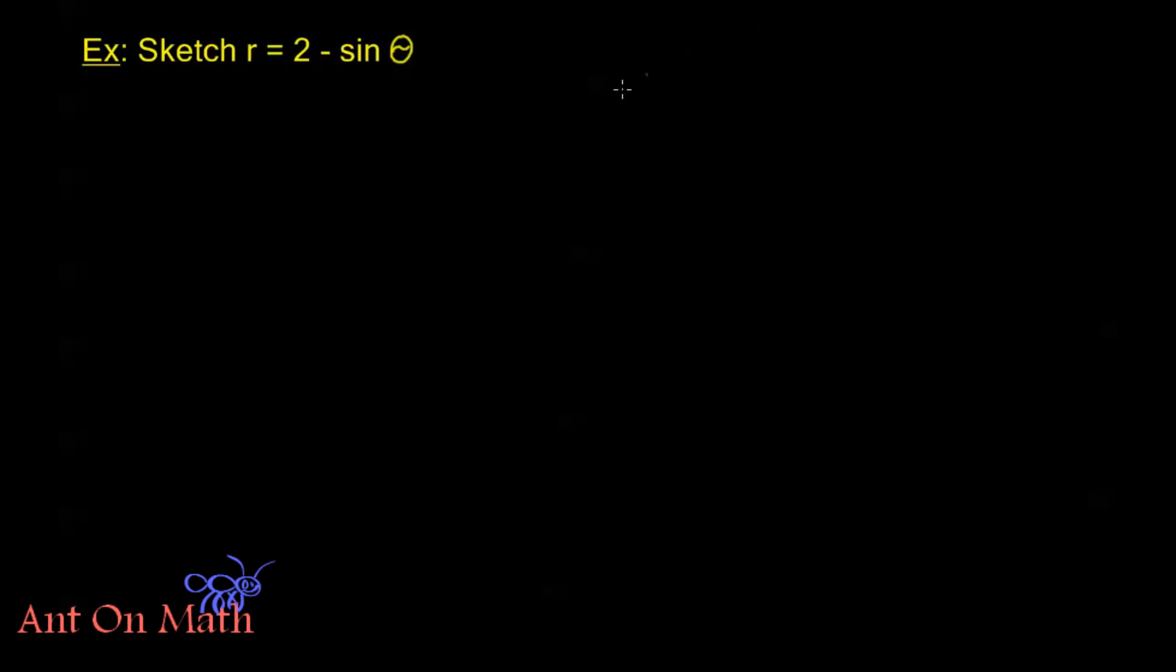So let's go ahead and draw out that reference graph. Now notice a couple of things here. We have a vertical shift of 2. I'm dealing with negative sine theta. And well that's it for now. Let's go ahead and take a look.